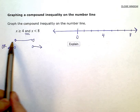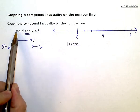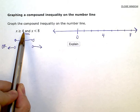And I know I'm in between these because I want the x values that are greater than four, but at the same time, they have to be less than eight.